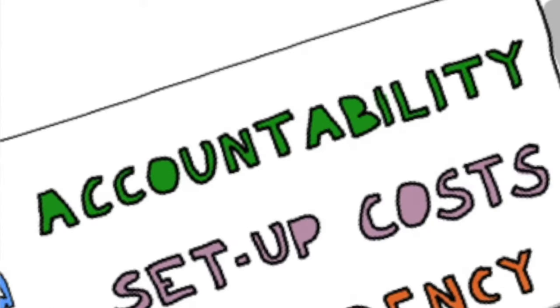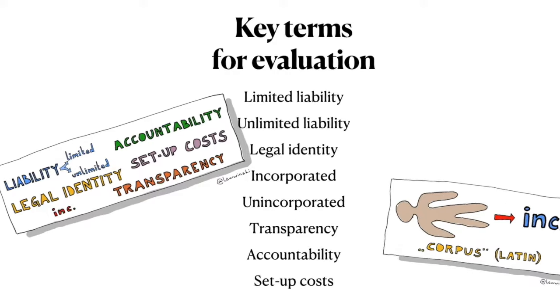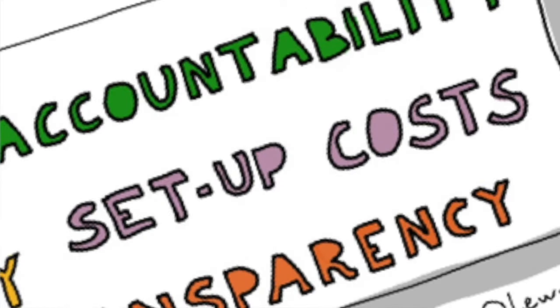The next item is accountability — being answerable to someone. Some businesses, such as a Sole Trader, have really low accountability because it's just one person; you are answerable to yourself. But the more people are involved in an organization, the more accountability there is. That's pretty simple. And the last term is Setup Cost — simply the amount of money needed to start up a business in a given form. Sole Traders are usually the cheapest to start, and public limited companies are the most expensive to set up.